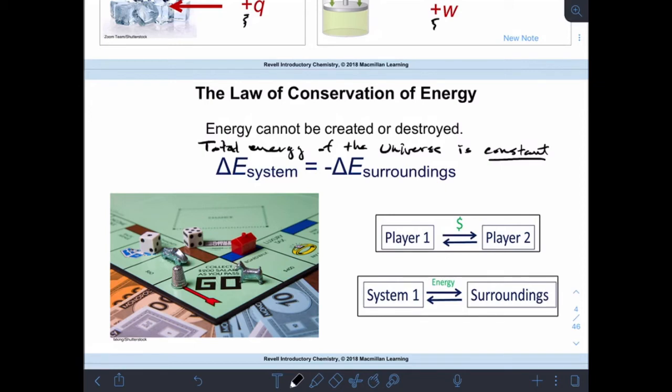So along with that, we get this idea of delta E system equals negative delta E surroundings. So the system is simply what we're looking at. So if what we're looking at is a piece of hot metal, or if what we're looking at is a chemical reaction, or fill in the blank, if whatever we're paying attention to, that is the system, and the surroundings is everything else.